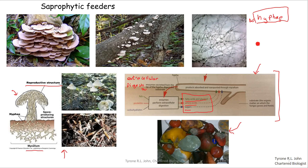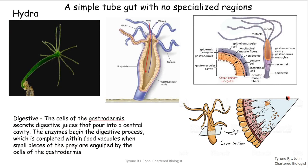That's saprophytic feeders and heterotrophic nutrition done. The last part of this video is to look at some basic organisms and what type of digestive guts they have — a comparison of gut structures in different organisms. On slide ten we're looking at an organism known as hydra, a simple aquatic organism that has what's known as a simple tube gut with no specialized regions.